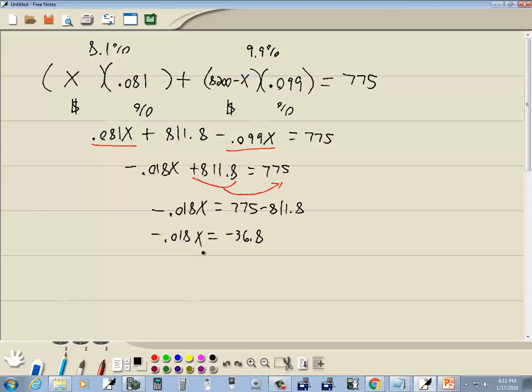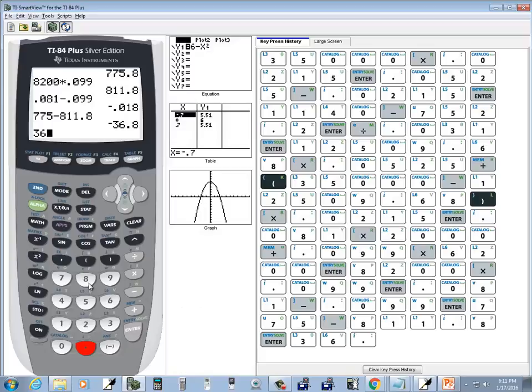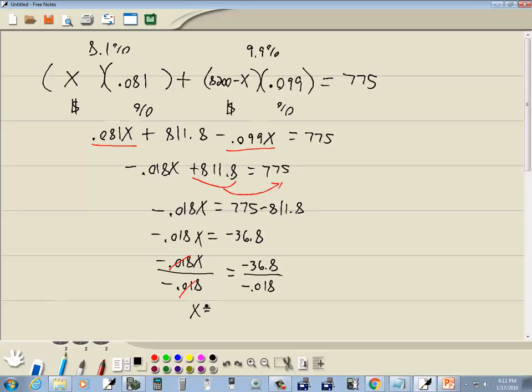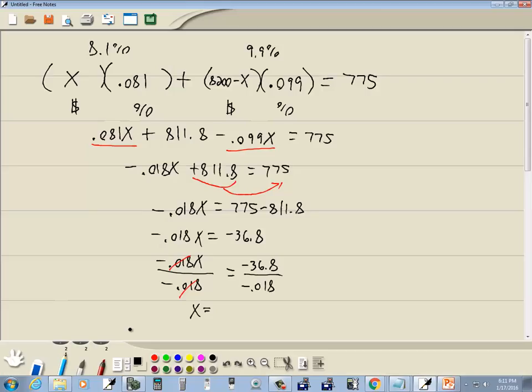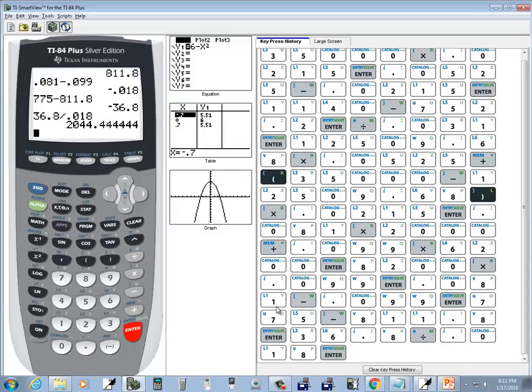Now we're solving for X. We'll divide both sides by the number in front of the X. So we'll divide both sides by negative 0.018. Same thing over here. And those are going to cancel. And negative divided by negative is positive. And 36.8 divided by 0.018. Now I'll round it two decimal places. Gives us 2044.44.